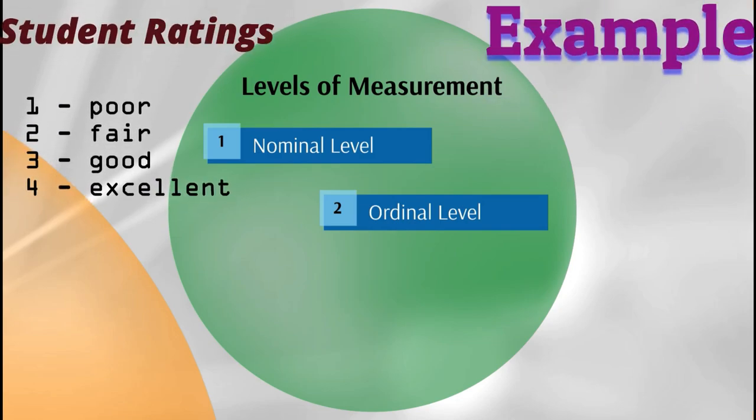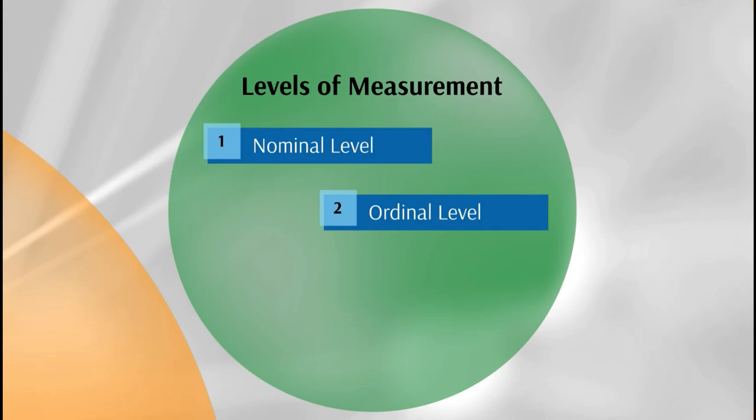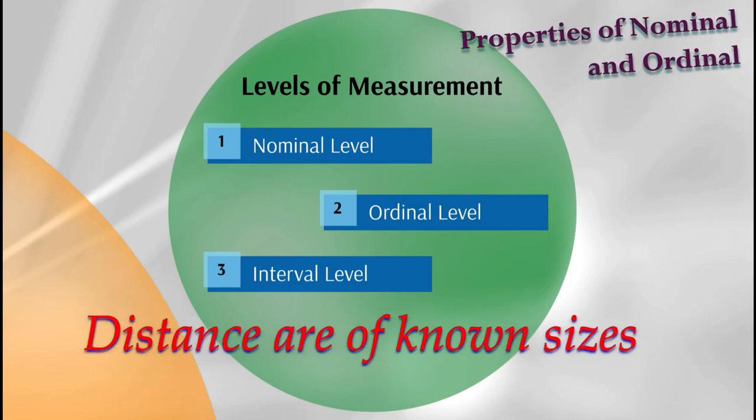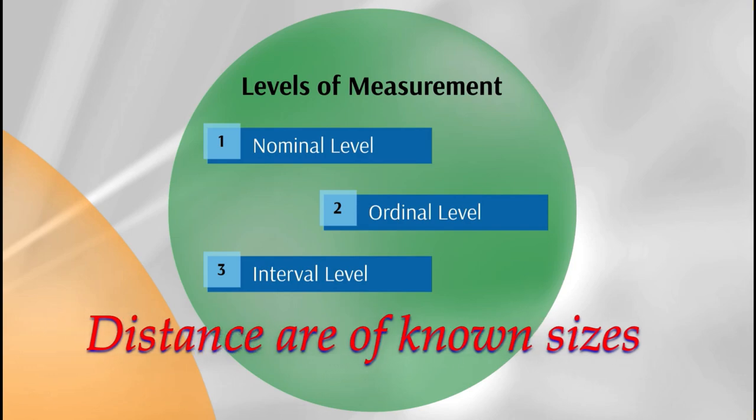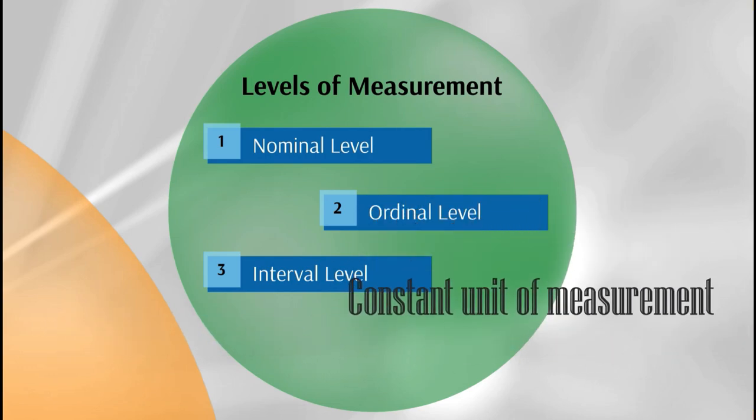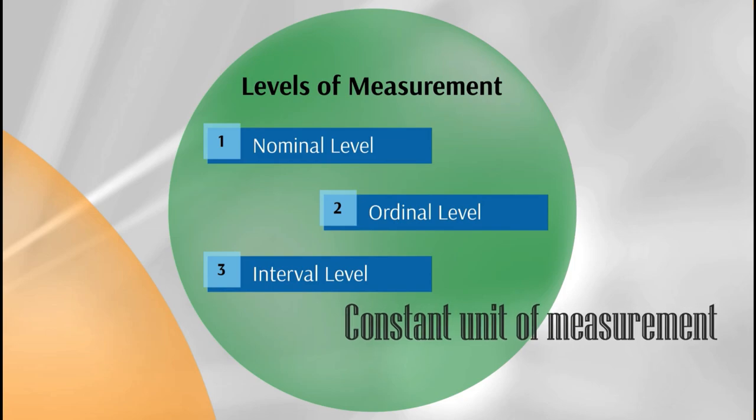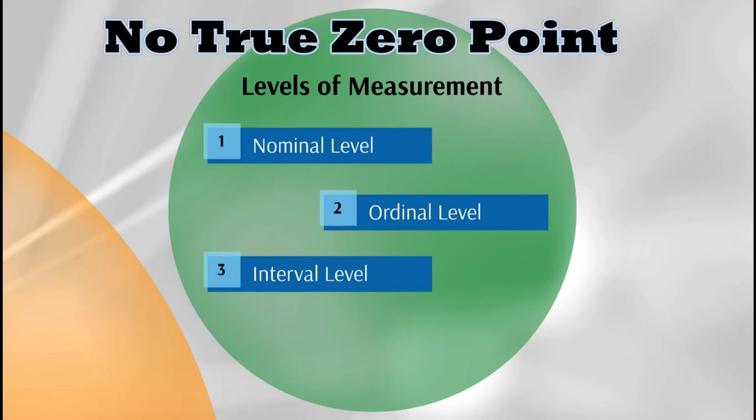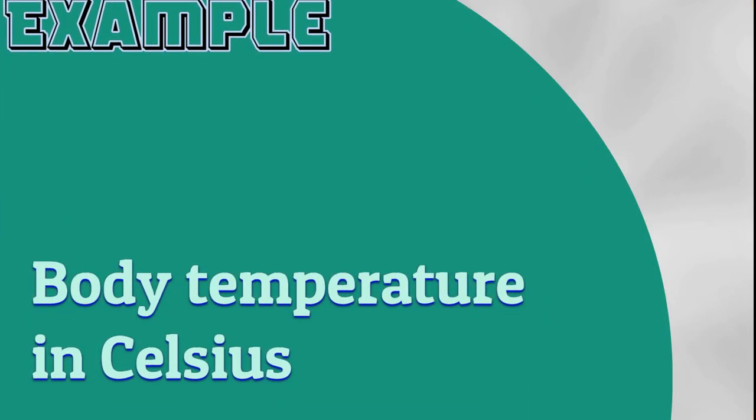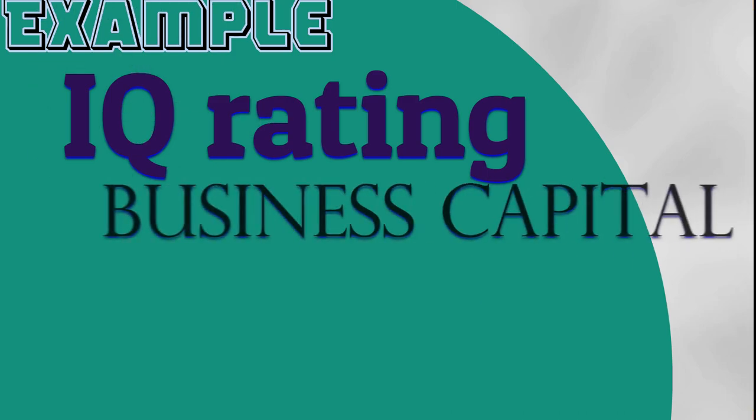Next is the interval level. The interval level has the properties of the nominal and ordinal levels and in addition the distances between any two numbers on the scale are of known sizes. An interval scale must have a common and constant unit of measurement. The unit of measurement is arbitrary and there is no true zero point. For example, body temperature in degrees Celsius.